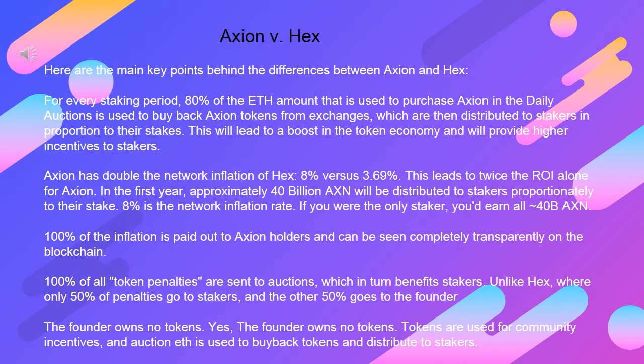8% is the network inflation rate. If you were the only staker, you'd earn all 40 billion AXN. 100% of the inflation is paid out to Axion holders and can be seen completely transparently on the blockchain. 100% of all token penalties are sent to auctions, which in turn benefits stakers. Unlike HEX, where only 50% of penalties go to stakers and the other 50% goes to the founder.